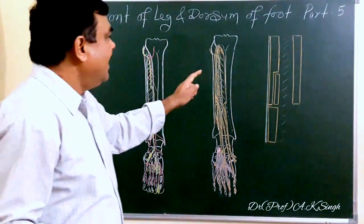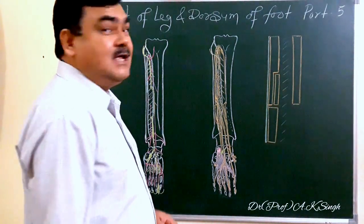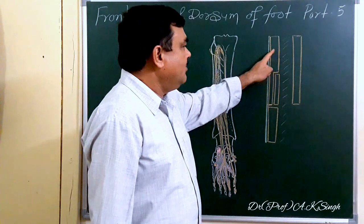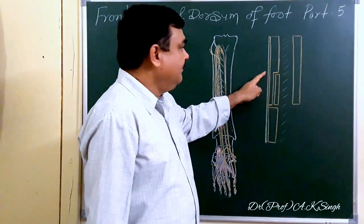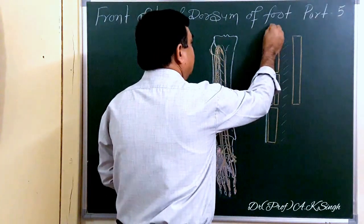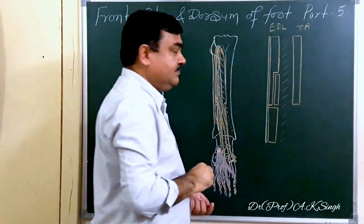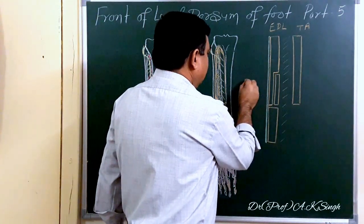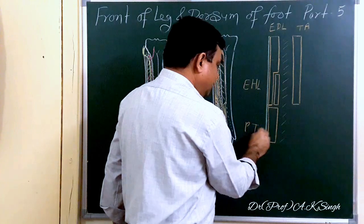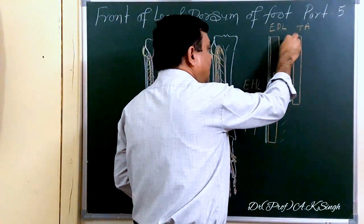Now we will discuss about the front of leg and dorsum of the foot, part 5. In this part we will discuss about the relations. Here in the anterior compartment of leg and dorsum of the foot, you can see the anterior intermuscular septum. This muscle is tibialis anterior, this muscle is extensor digitorum longus, and this muscle is peroneus tertius. Here is the interosseous membrane and the position of the anterior tibial artery.